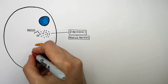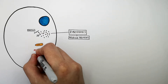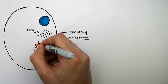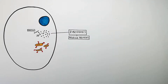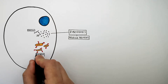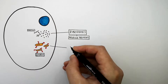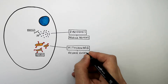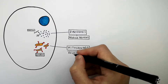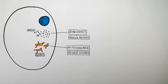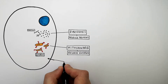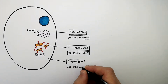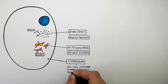This organelle of the animal cell is the mitochondria. It releases energy during respiration. So the mitochondria releases energy. This is the cytoplasm of the cell, and it's a gel-like substance where reactions take place.